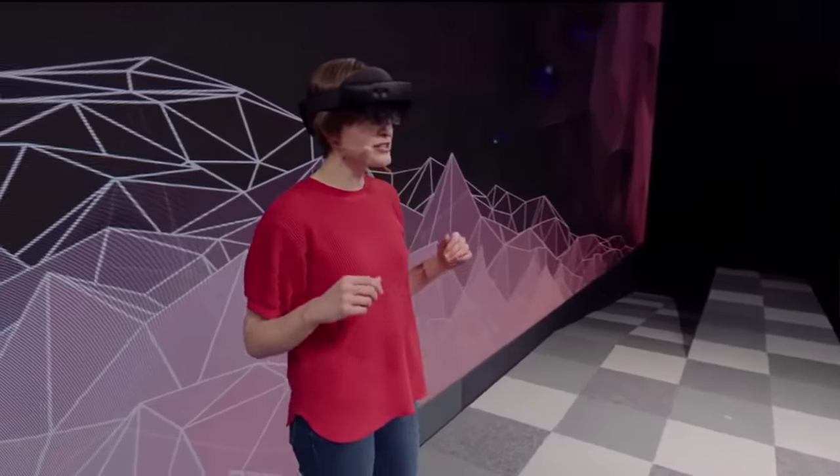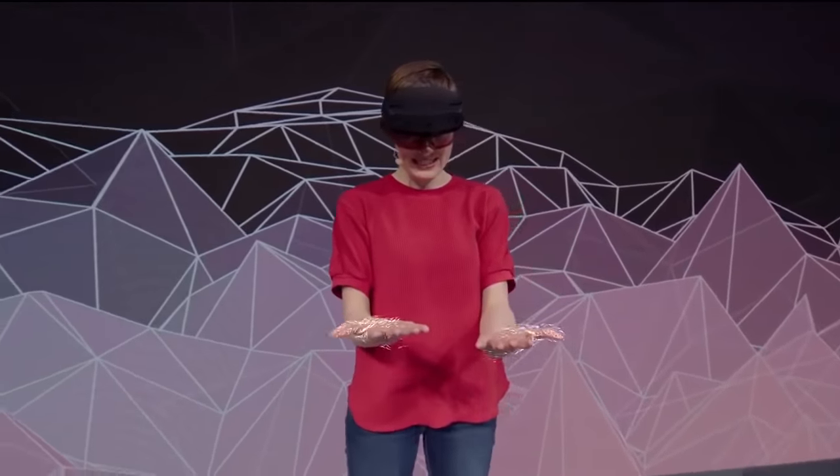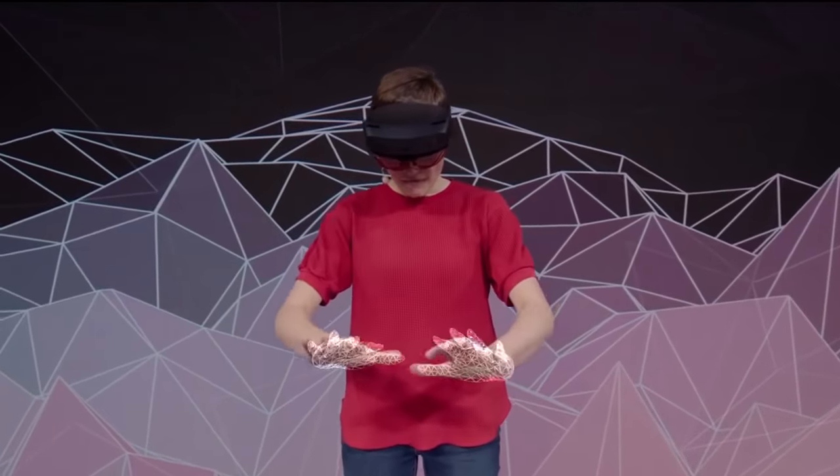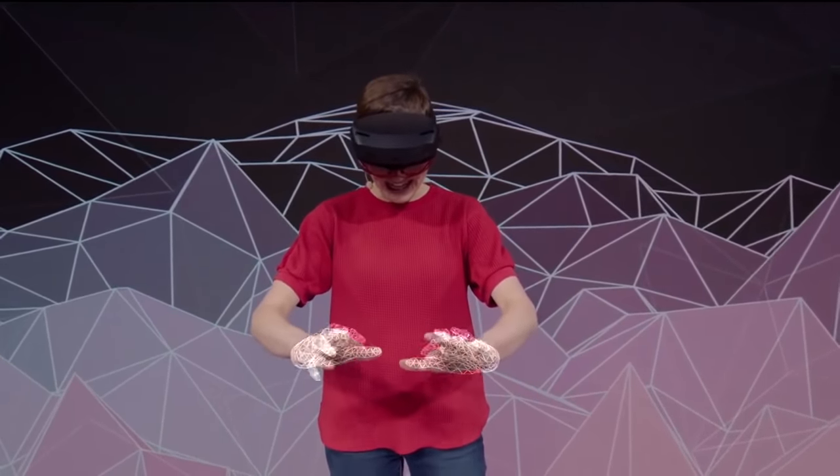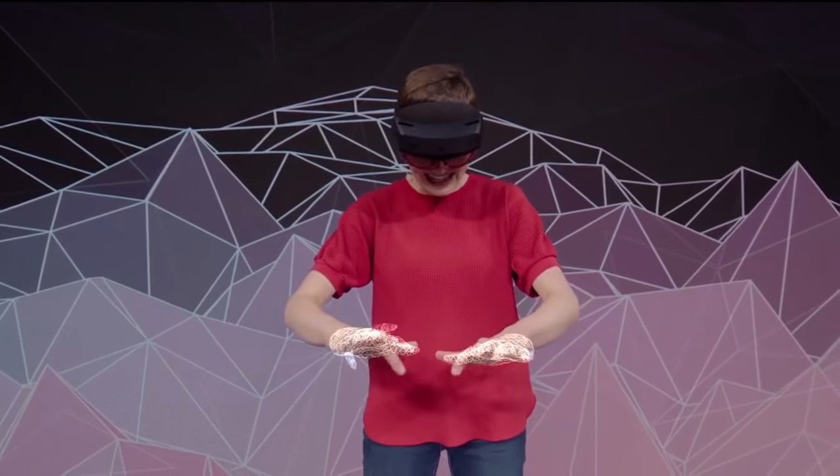Now, not only does the HoloLens 2 recognize me, it also recognizes my hands. Look at this. Fully articulated hand tracking. And as I move my hands around, the HoloLens 2 is actually calibrating to my unique hand size.